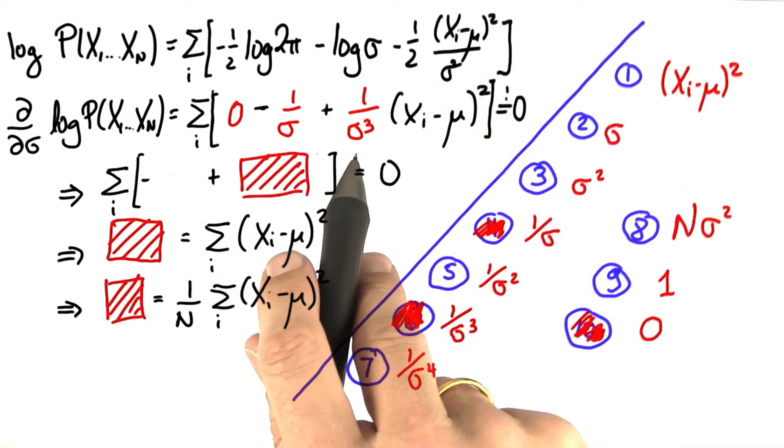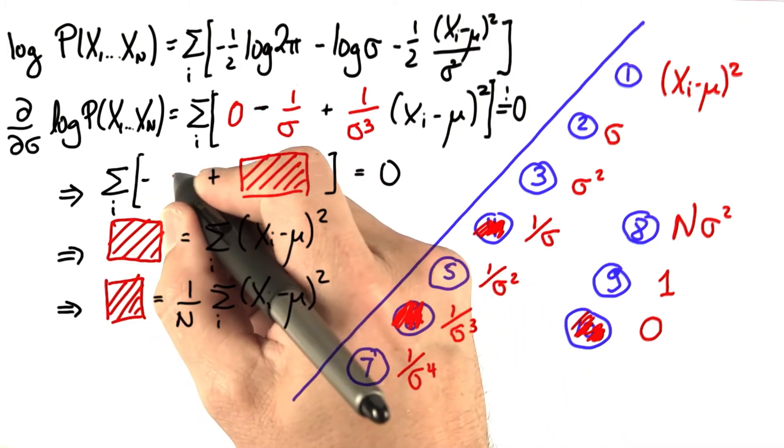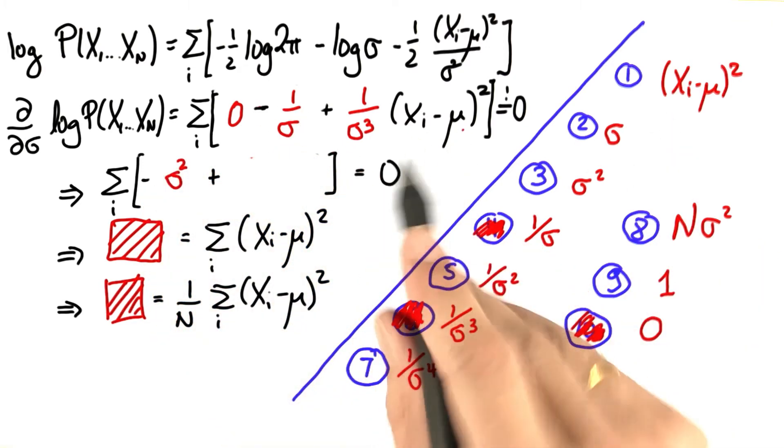To get rid of all these sigmas in the denominator, we multiply up sigma to the 3, which gives sigma square over here and leaves only this expression on the right side.